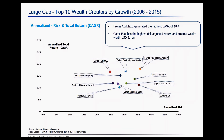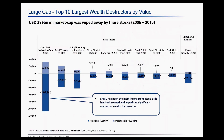This is the risk-return profile of the large cap wealth creators, showing the top 10 wealth creators in terms of total return generated. Fayaz Abdulaziz, which generated a CAGR return of 18% during the period, is also the most volatile stock among the group.